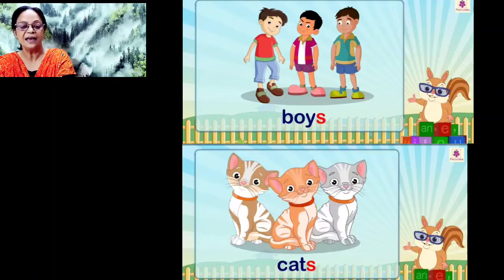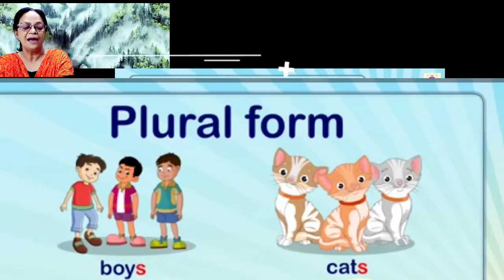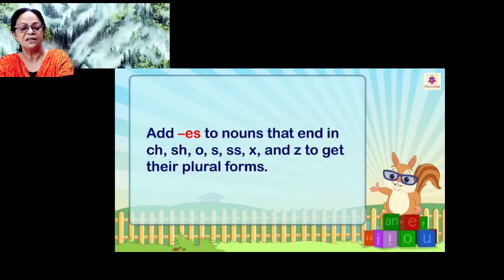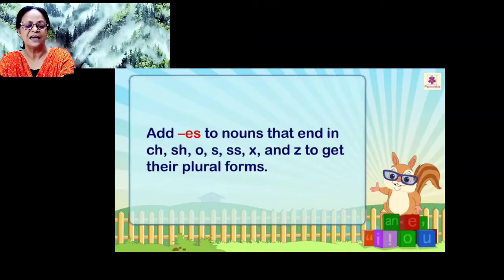We add 's' to most nouns to show plural form. We add 'es' to nouns that end in ch, sh, o, s, ss, x, and z to get their plural forms.